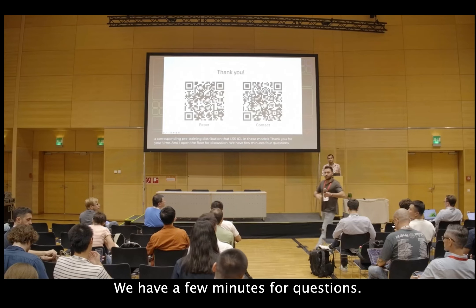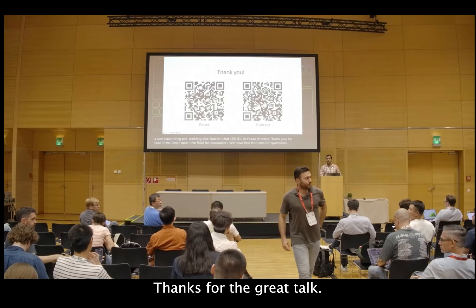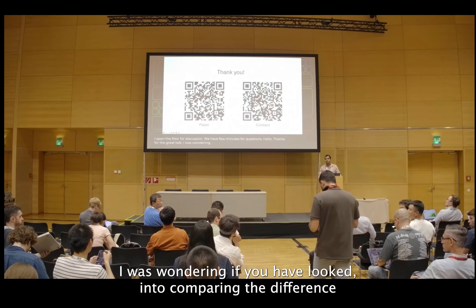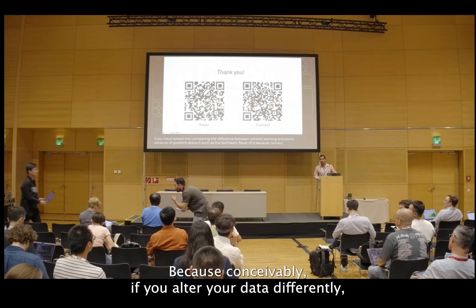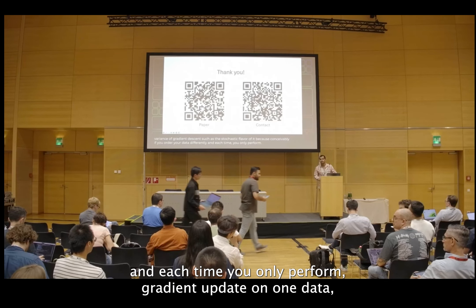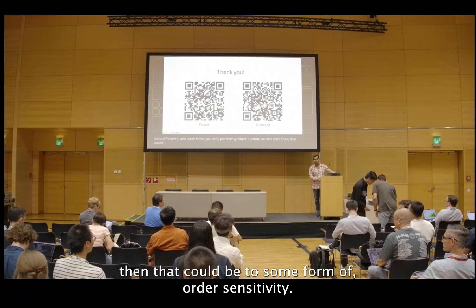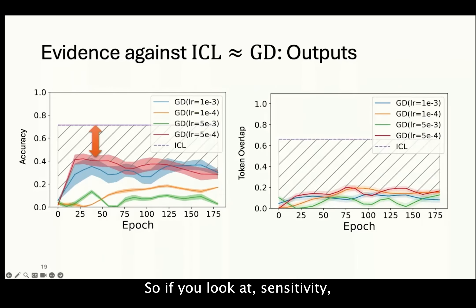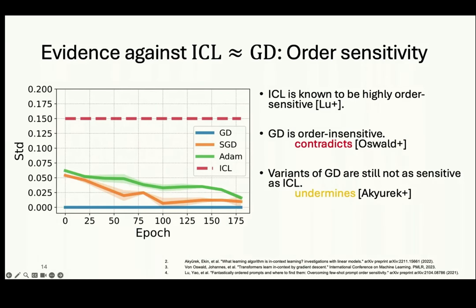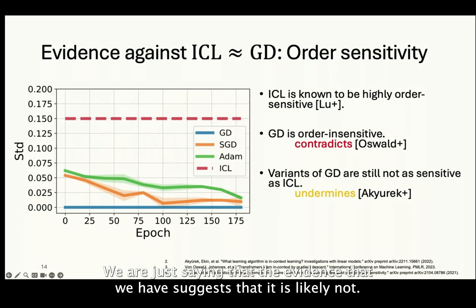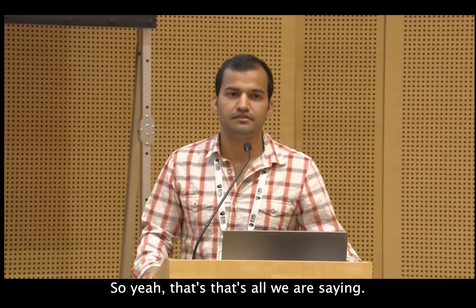Thank you. We have a few minutes for questions. I was wondering if you have looked into comparing in-context learning and some variance of gradient descent such as the stochastic flavor of it, because conceivably if you order your data differently and each time you only perform a gradient update on one data point, that could lead to some form of order sensitivity. If you look at the order sensitivity of SGD as well as Adam, it is still quite less sensitive than ICL. So we are not claiming that ICL is not equivalent to GD — we are just saying that the evidence we have suggests it is likely not.